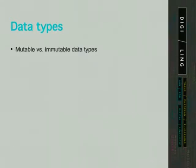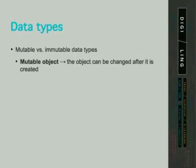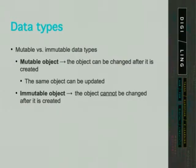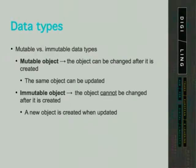Data types can be mutable or immutable. In object-oriented programming, a mutable object can be changed after it is created. On the other hand, an immutable object cannot be changed after it is created. This means that when a mutable object is updated, it does not return a new object, while an immutable object returns a new object when updated.